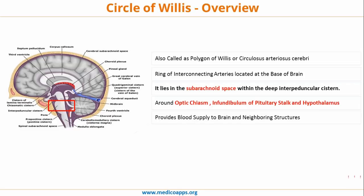The most important role of the Circle of Willis is providing blood supply. It is an excellent example of collateral circulation in the brain. Since these are very critical structures, even if one artery of the Circle of Willis is blocked, other arteries provide collateral blood circulation to these areas. The main function is to supply blood to the brain and neighboring structures.